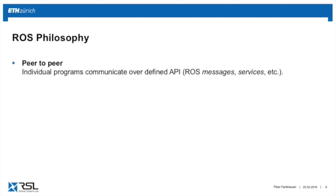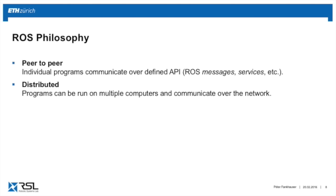The philosophy of ROS is that you have many individual programs on your PC which communicate over defined APIs — ROS messages and services — defining how programs communicate with each other. It's peer-to-peer communication running on your system. Since it's peer-to-peer, it can be distributed on multiple PCs. If a robot has its own computer, they communicate over wireless, and it doesn't matter which PC the nodes run on. You can easily build a large distributed system with ROS.